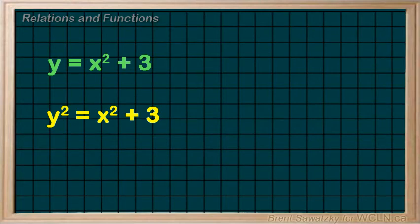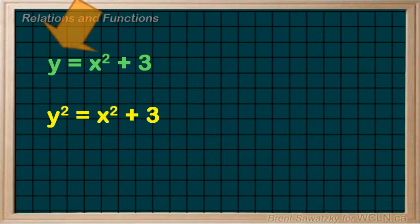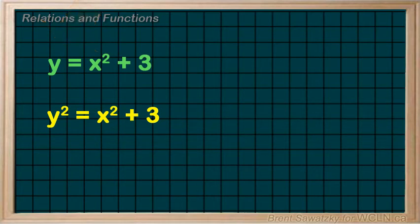A couple of relations in equation form. Are these relations also functions? Again, our criteria: a function has only one y-value for any x-value. If the relation is provided as an equation, determining whether there's more than one y-value for a given x-value can be a tad more challenging. Commonly, we just sort this out by graphing the equation and then doing the vertical line test. But there are some common indicators that can help us quickly recognize whether a relation in equation form is also a function. If the y is out front by itself, then we can quickly recognize that this relation is a function — if we plug in an x-value, we get a single y-value. Straightforward.